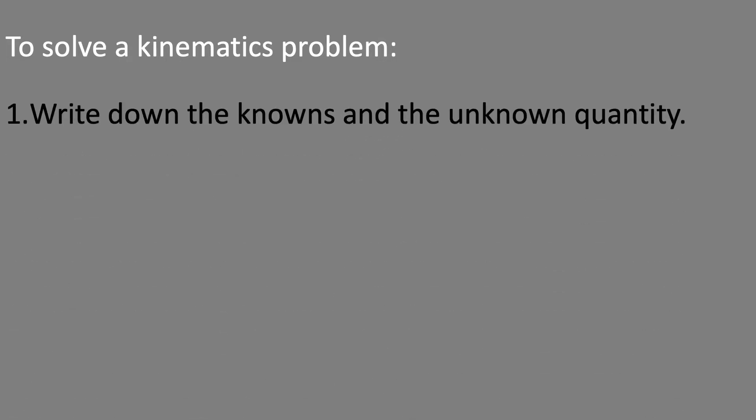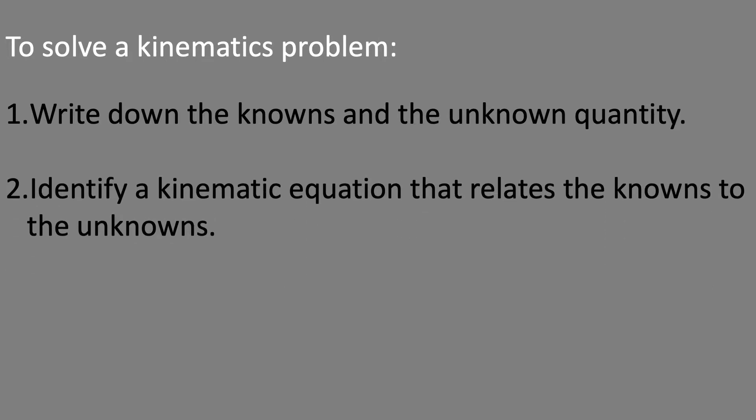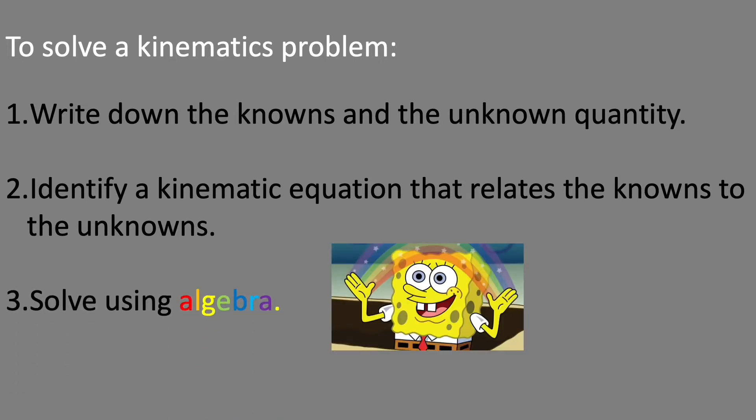Here are the steps to solve a kinematics question. First, read the question and write down the known quantities — most of them, except time, are vectors, so watch out for the sign. Also write the unknown quantity; you should have four quantities total. Once you have four quantities, there will be one equation that relates those four. Pick that equation and write it down. If the equation is not already solved for what you're looking for, solve for that variable using algebra first, then plug in numbers.